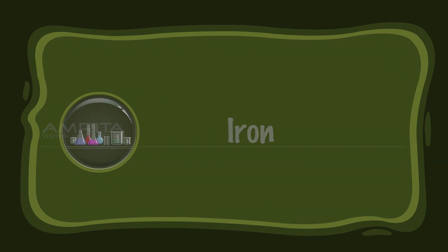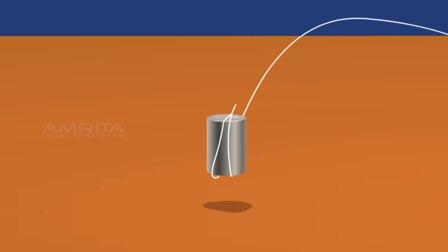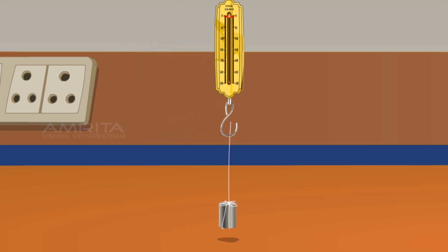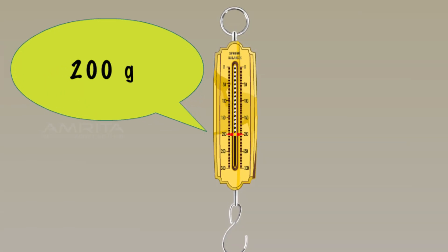Iron. Use a spring balance, a piece of iron, and a piece of twine. Tie the iron using the twine. Now, weigh the iron using the spring balance by looping the free end of the twine to the spring balance and suspending it vertically. The mass of the iron piece is 200 grams.